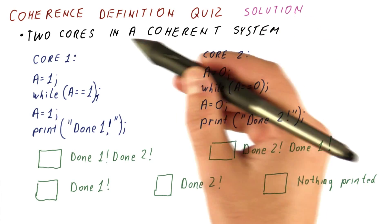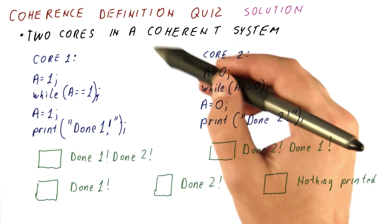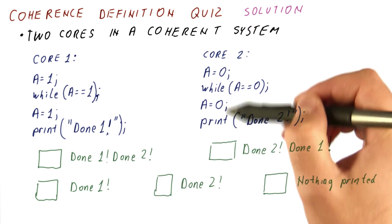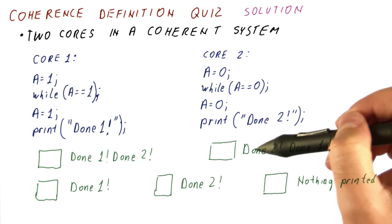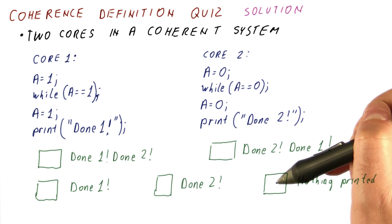Let's look at the solution to our coherence definition quiz, where we had two cores running in a coherent system, executing some code. And the question was basically, which of these five possibilities for what gets printed are possible?